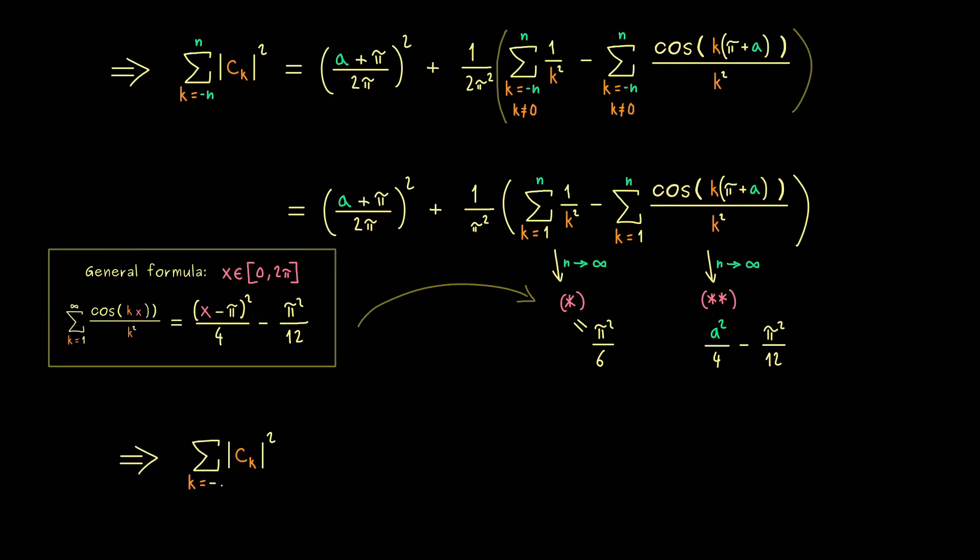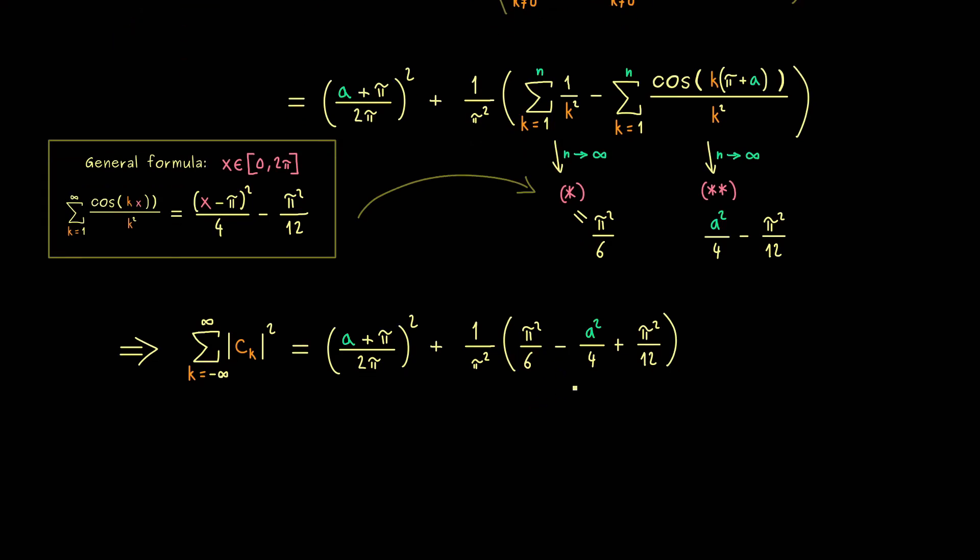So now we go here from minus infinity to plus infinity. And then of course the constant does not change in the limit. And here we already calculated what we get. And please note that we have a minus sign in front of the cosine sum. So we have a sign flip here. And moreover, we also recognize that we can cancel pi squared here. And then we can simply add 1 over 6 plus 1 over 12, which exactly gives us 1 quarter.